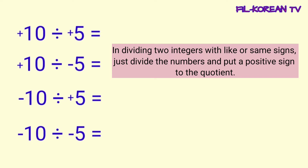Sa pag-divide ng dalawang integers na pareho ang sign, i-divide lamang natin yung numbers at lalagyan natin ng positive sign ang answer or quotient.